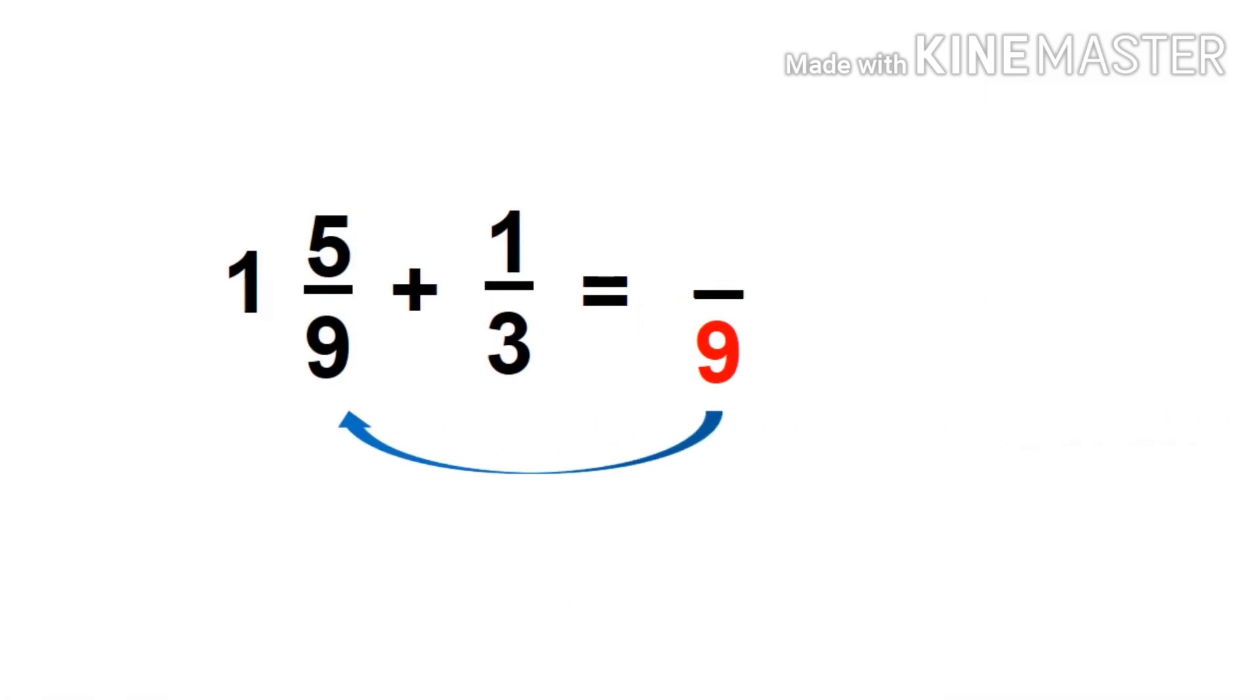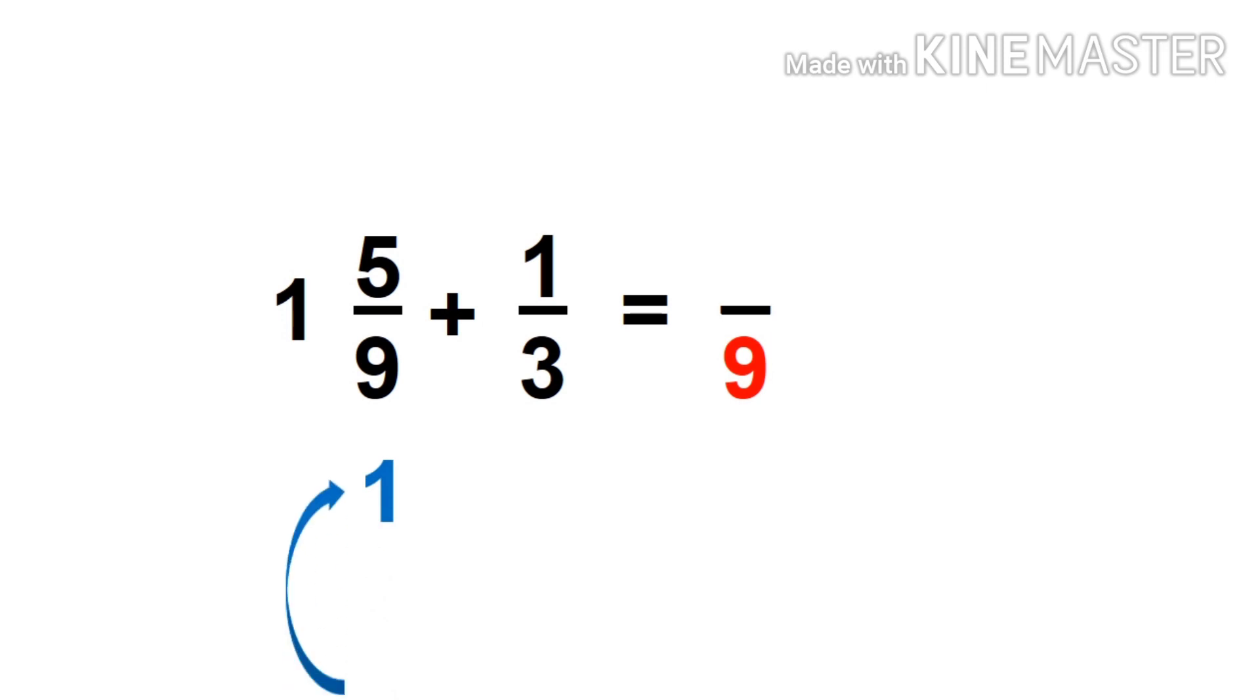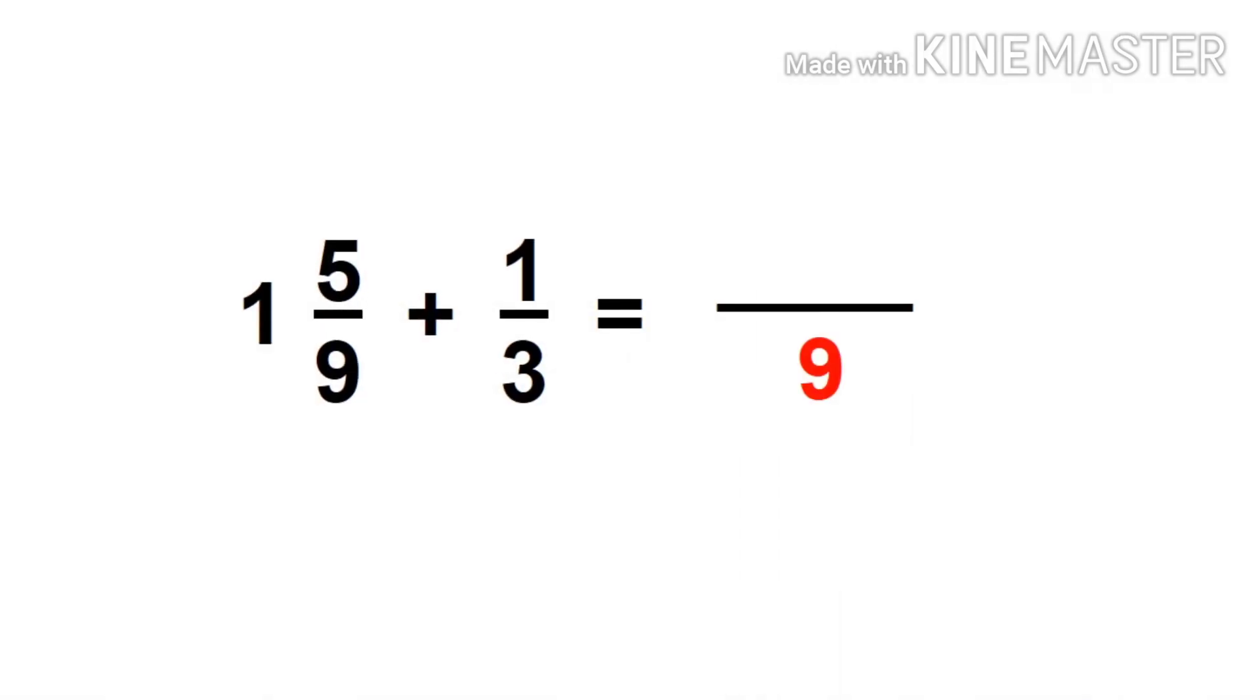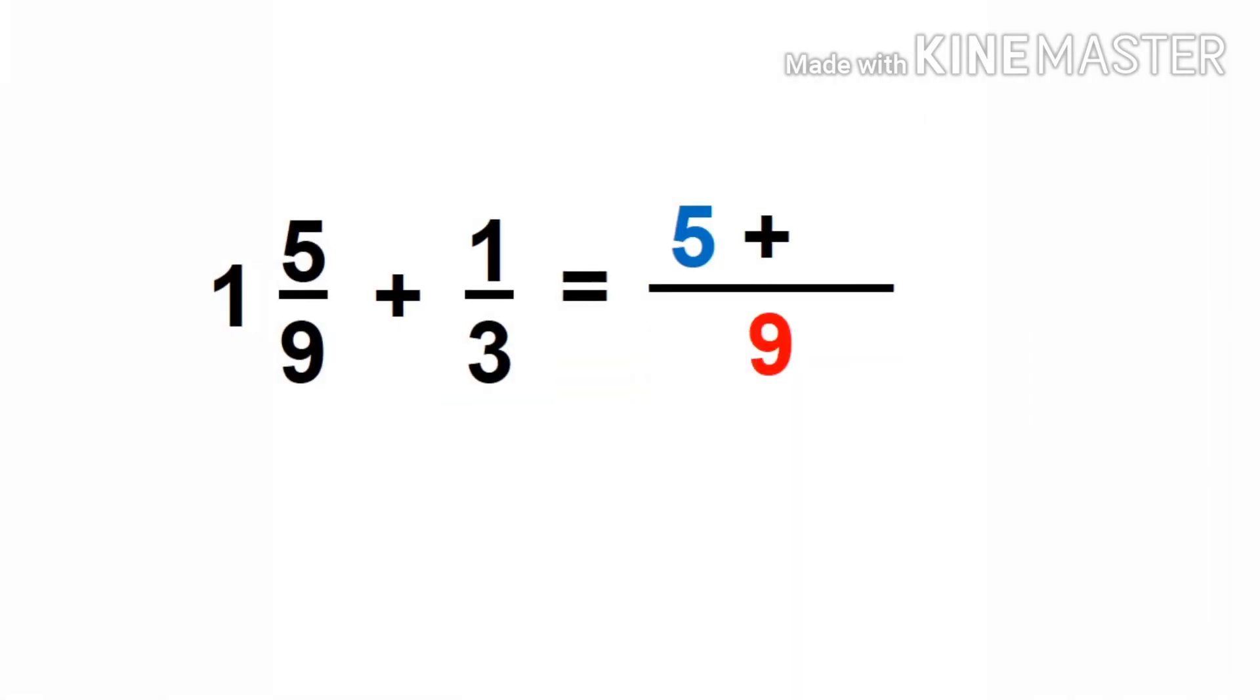Then divide 9 with the first denominator. 9 divided by 9 equals 1. 1 times 5 is 5. So we're going to write 5 as our first numerator followed by the plus sign.